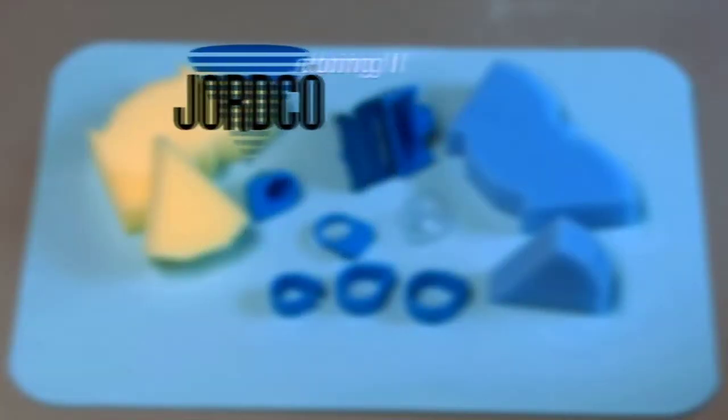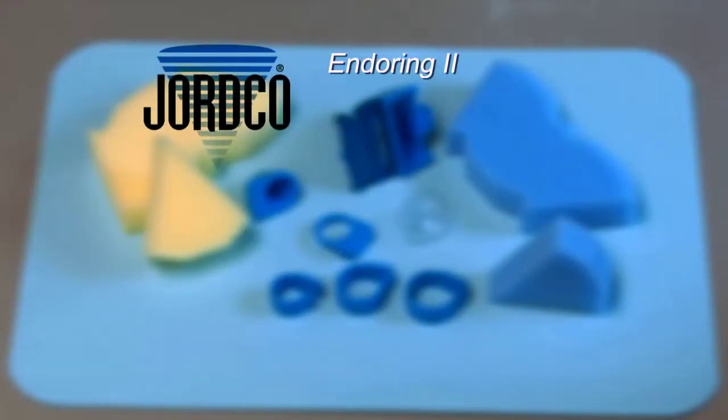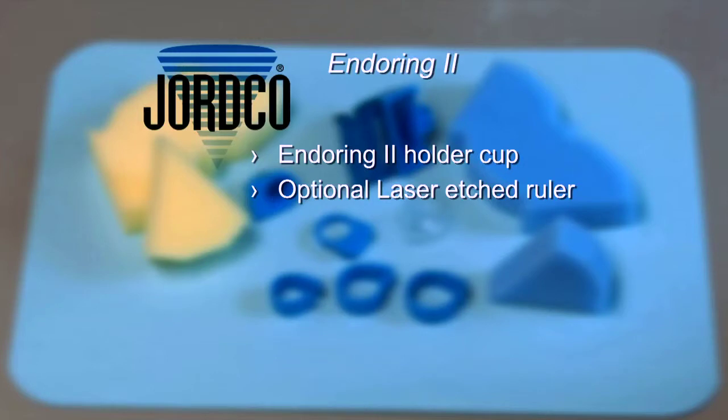The Ender Ring 2 by Jordco consists of the following components: the Ender Ring cup holder with a built-in 30mm ruler or as shown with an optional 30mm laser etched metal ruler. The Ender Ring 2 also features a gel well system that includes either a solid reusable cup or a single use clear cup and supporting adapter ring.